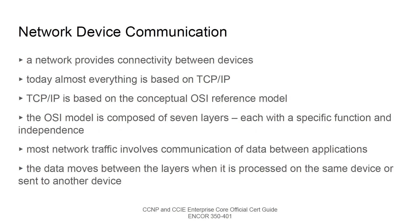Let's talk about network device communication. The primary purpose of a network is to provide connectivity between devices — to enable applications or devices to communicate with each other. This is good to understand even from a business perspective. Today's networks are almost entirely based on TCP/IP, which in turn is based on the conceptual OSI reference model.